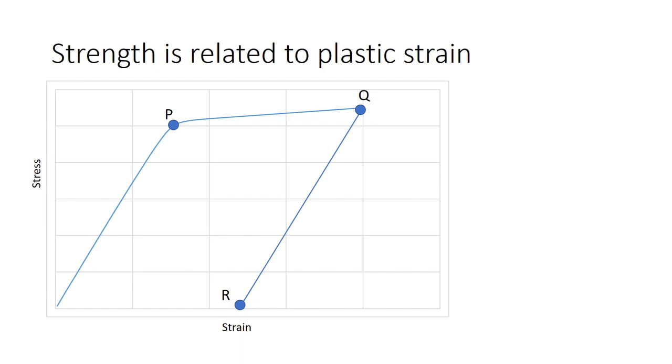Let's load the material till Q and then unload it to R. And note that P is our initial yield. Now let's reload the material from R towards Q. One may expect to yield at Q prime which is the initial yield, but the material yields at Q. That means the material has gained some strength corresponding to QQ prime which could be related to the plastic strain epsilon P.